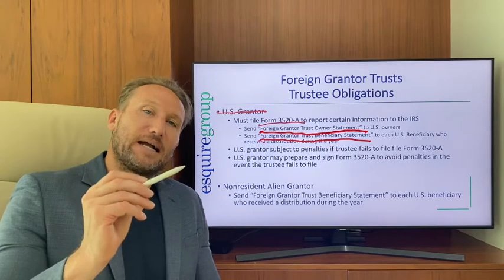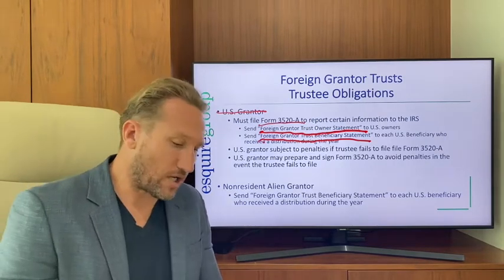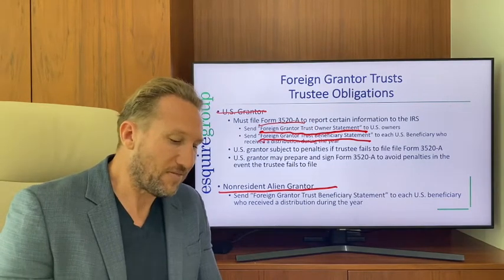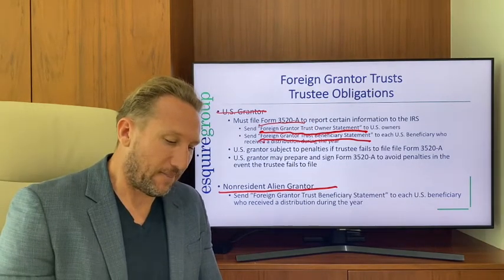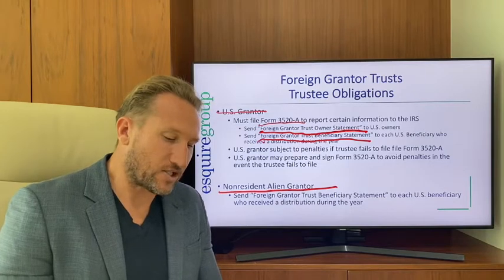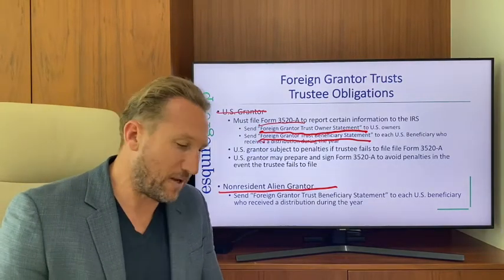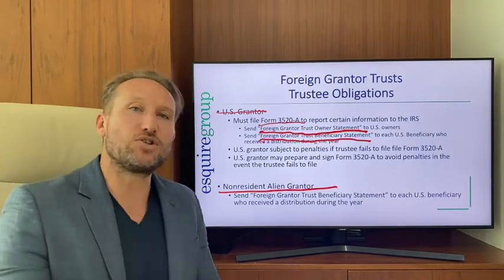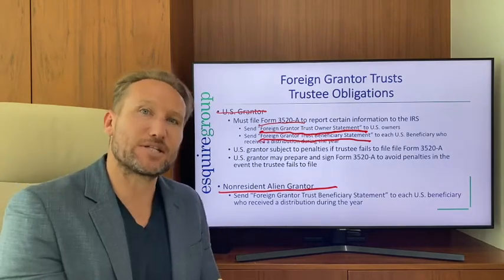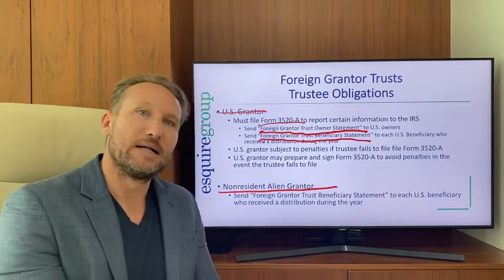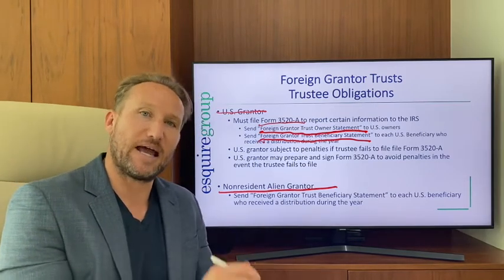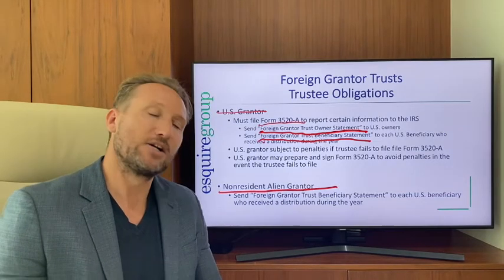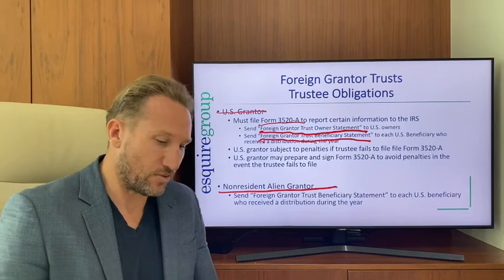If it's a foreign grantor trust with a non-resident alien grantor, the trustee should send a foreign grantor trust beneficiary statement to every U.S. beneficiary that received a distribution. Without doing that, the beneficiary will be subject to U.S. tax. It's critical that this statement be sent so the beneficiary can avoid paying tax on the distribution.